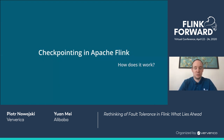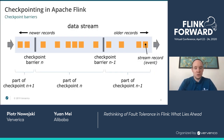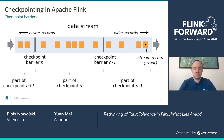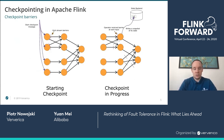First, let's talk about the current checkpointing mechanism. The whole idea is that in order to deal with failures, Flink is periodically taking a global snapshot of the state of all operators. When the time comes to trigger the next checkpoint, Flink injects checkpoint barriers into the source operators, and from there checkpoint barriers flow through the data channels. In order for the state of each operator to be consistent, a state snapshot is taken only once an operator receives checkpoint barriers from all incoming channels. This is called the checkpoint alignment phase.